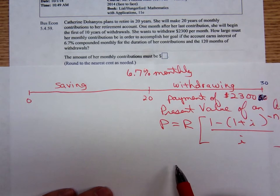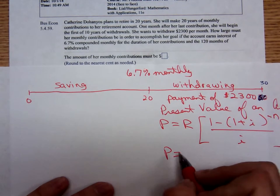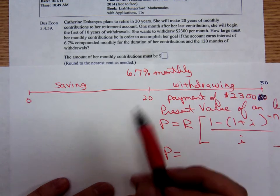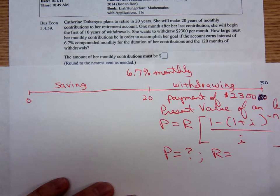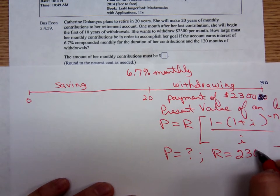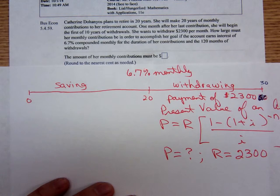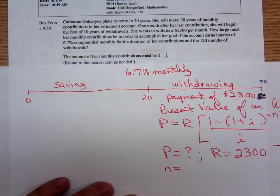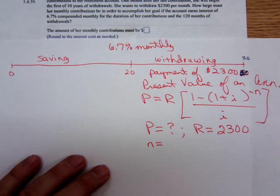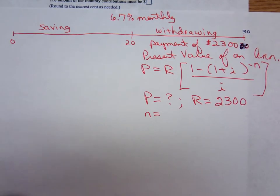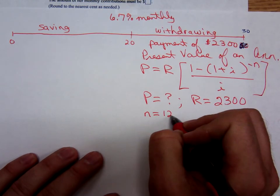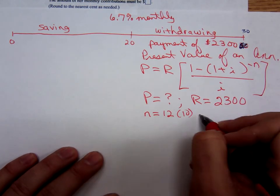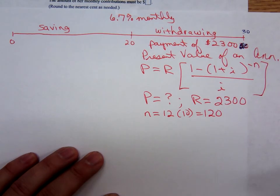Let's identify the values. P, that's the amount right there at the beginning of the last 10 years. We don't know that. That's what we're trying to find. R, the amount of the periodic payment, she wants to get $2,300 every month once she retires. How many payments will she get? We're only working with the last 10 years now. Well, there's 12 payments a year for 10 years. She's going to get 120 payments once she retires.